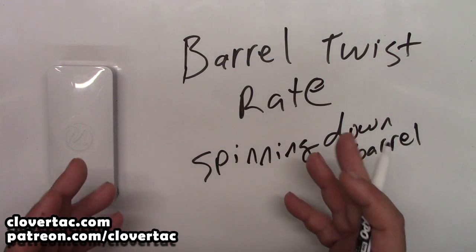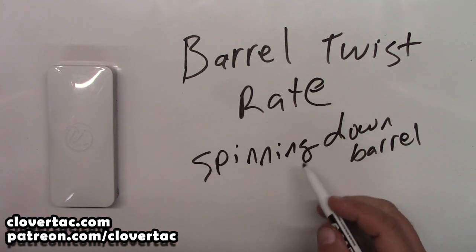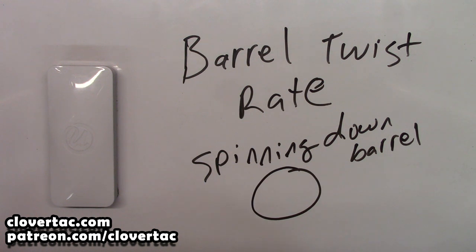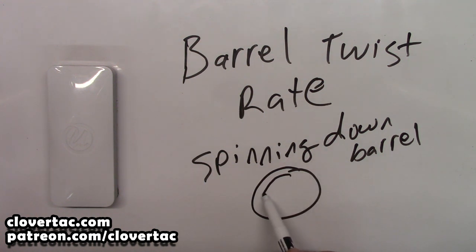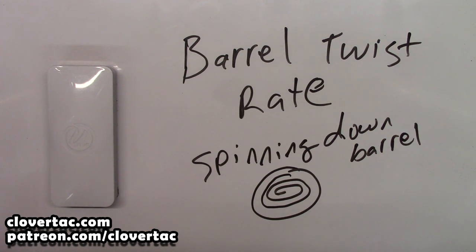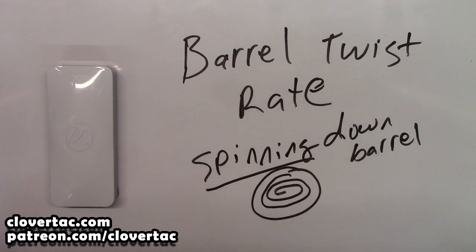Now hopefully you're familiar with the concept of a rifle barrel. If we were looking down a rifle barrel, you would notice that there would be like a spiral pattern to those landing grooves. That's what's going to create the spin.